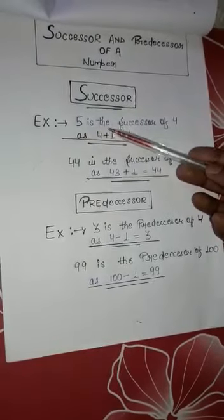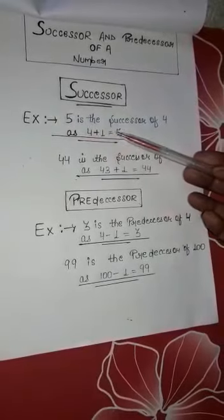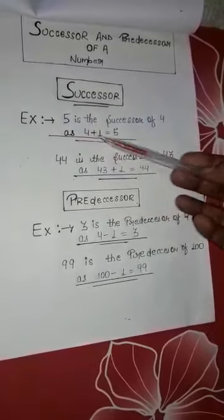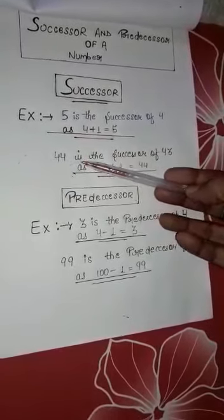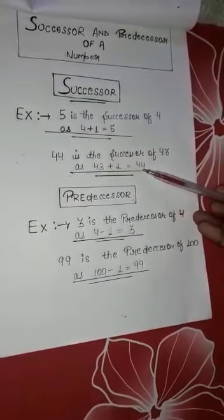For example, 5 is the successor of 4, as 4 plus 1 equals 5. Then, 44 is the successor of 43. 43 plus 1 equals 44.